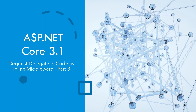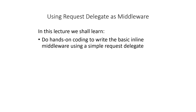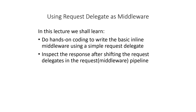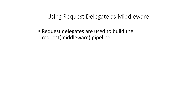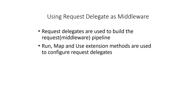Hello and welcome. In this lecture we'll be taking the request delegate in code as an inline middleware — this is part eight of the series, so I strongly request you to go through the other parts if you haven't, because this part builds on the last few lectures. The learning outcome for today: we shall do hands-on coding to write basic inline middleware using a simple request delegate, and inspect the response after shifting the request delegates in the request pipeline. Request delegates are used to build the request pipeline or middleware pipeline.